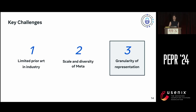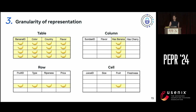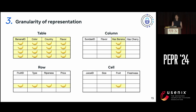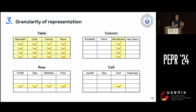Finally, the granularity of representation is an interesting challenge. We may have an entire table that is banana data — say a banana table with color, country, and flavor. But we may also have column-level granularity; maybe I'm making an ice cream sundae and I only need to know whether it has a banana — that's the one column that's banana data. We can also bring this down to the row level or cell level, where some rows are banana but others are apples or oranges.